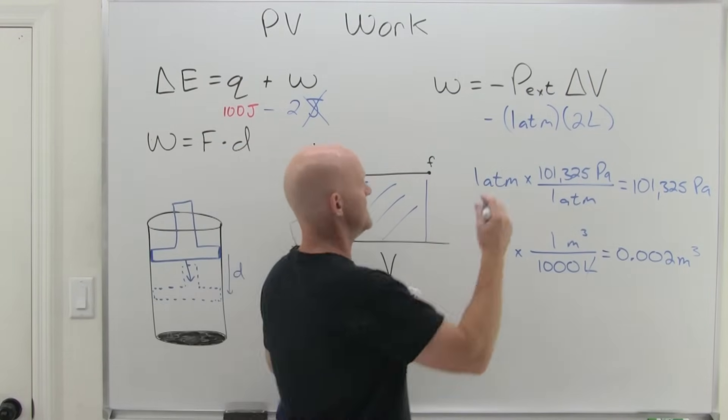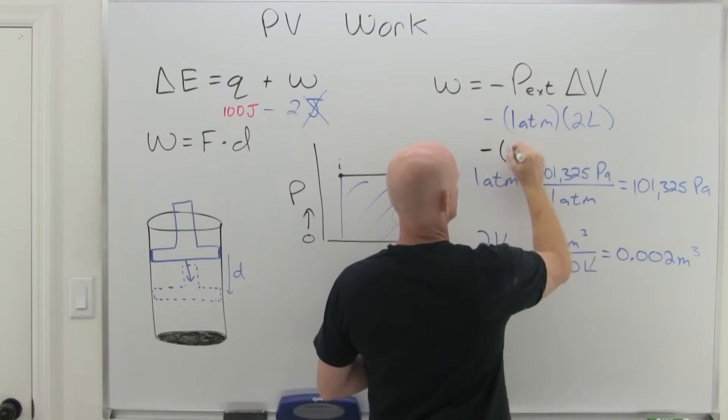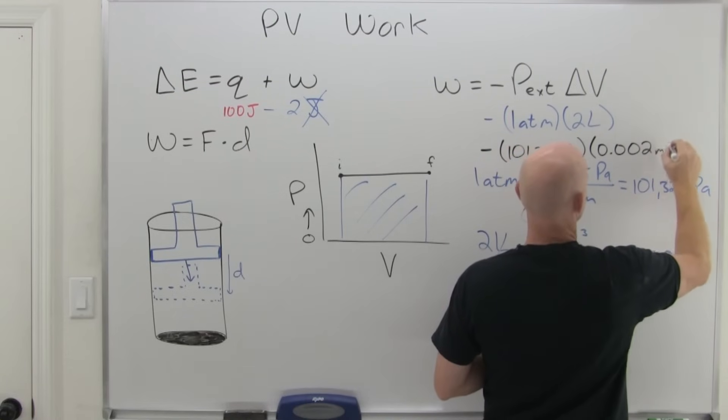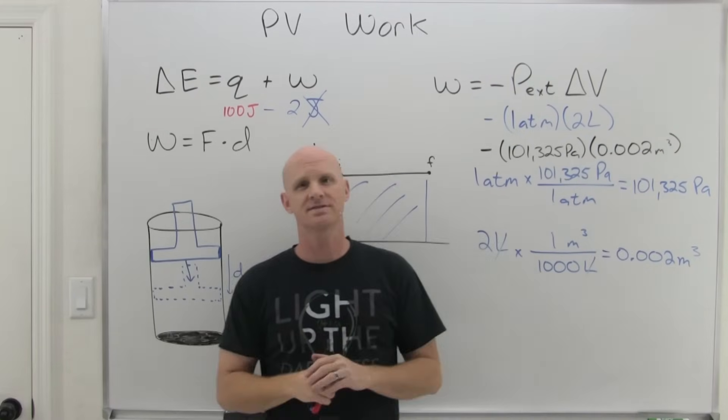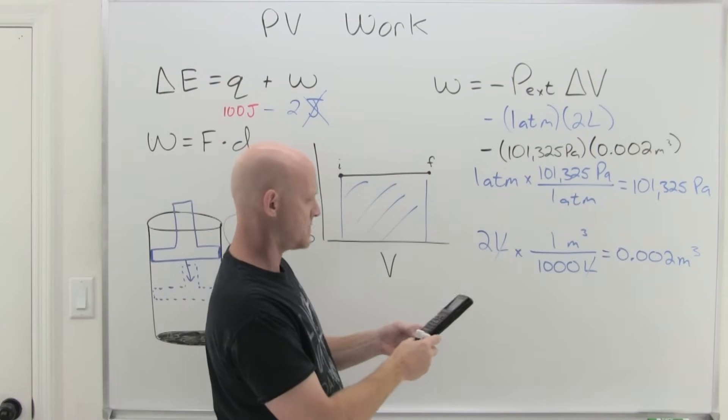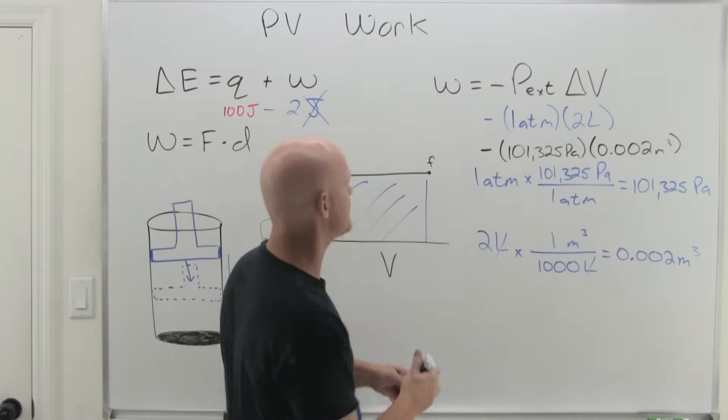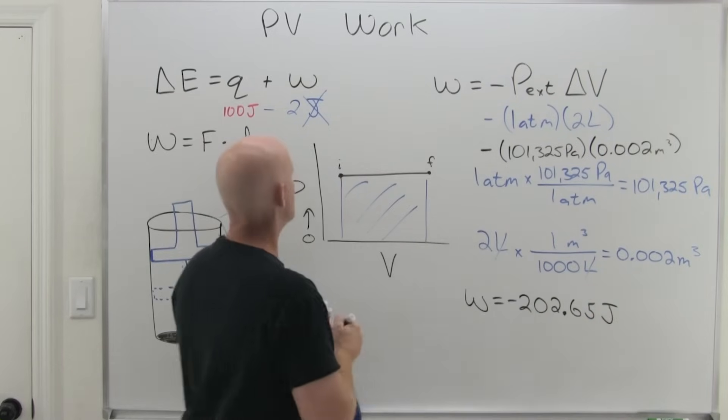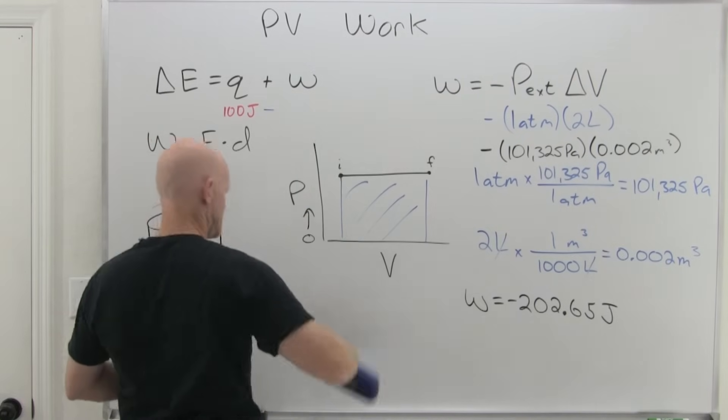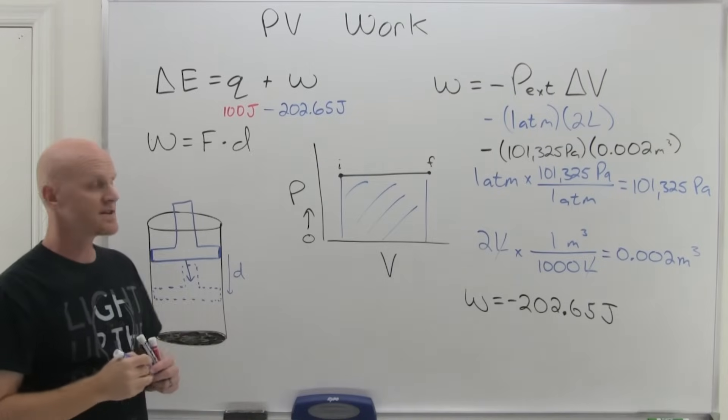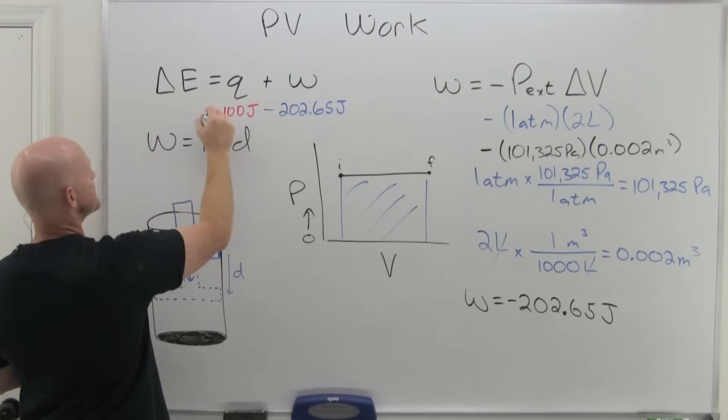And now we've got a pressure in Pascals and this guy in meters cubed, the volume change. And now we could plug those in. So in this case, this is really going to come out to negative P, which again is 101,325 Pascals times delta V, which in this case is 0.002 meters cubed. And it turns out a Pascal meter cubed is indeed the same thing as a joule. So we can go 101,325 times 0.002, and we're going to get 202.65. In that case, that is indeed negative. So we'd have work equals negative 202.65 joules. And so now we could insert that back in here in the proper units.